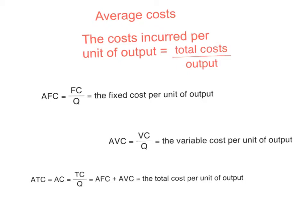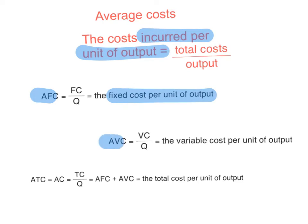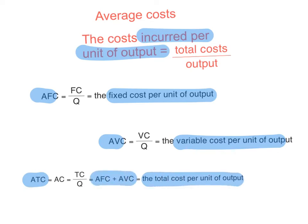Just a quick refresher: average costs are the costs incurred per unit of output, and there are three types. Average fixed cost is the fixed cost per unit. Average variable cost is the variable cost per unit. Average total cost is the total cost per unit, and it is calculated by adding average fixed cost and average variable cost.